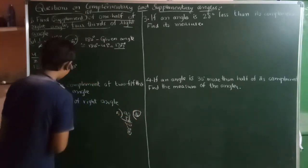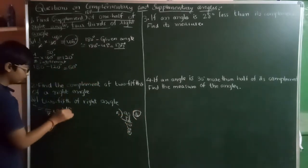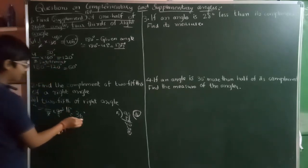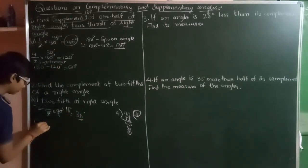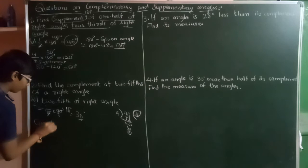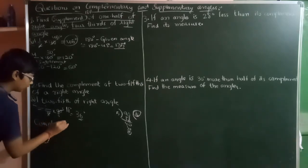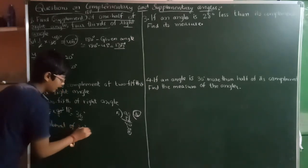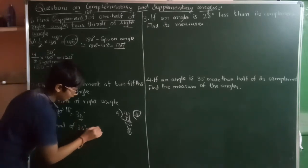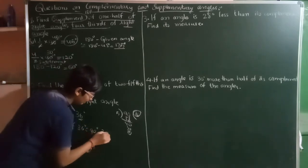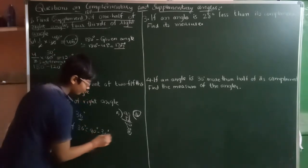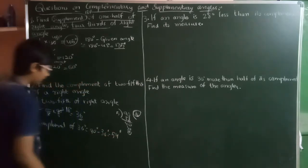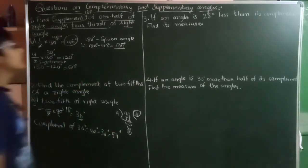Here 18 into 2 gives 36 degrees. Now we should find the complement. The complement of 36 degrees will be 90 degrees minus 36 degrees. This will be 54 degrees. This is the complement of 36 degrees.